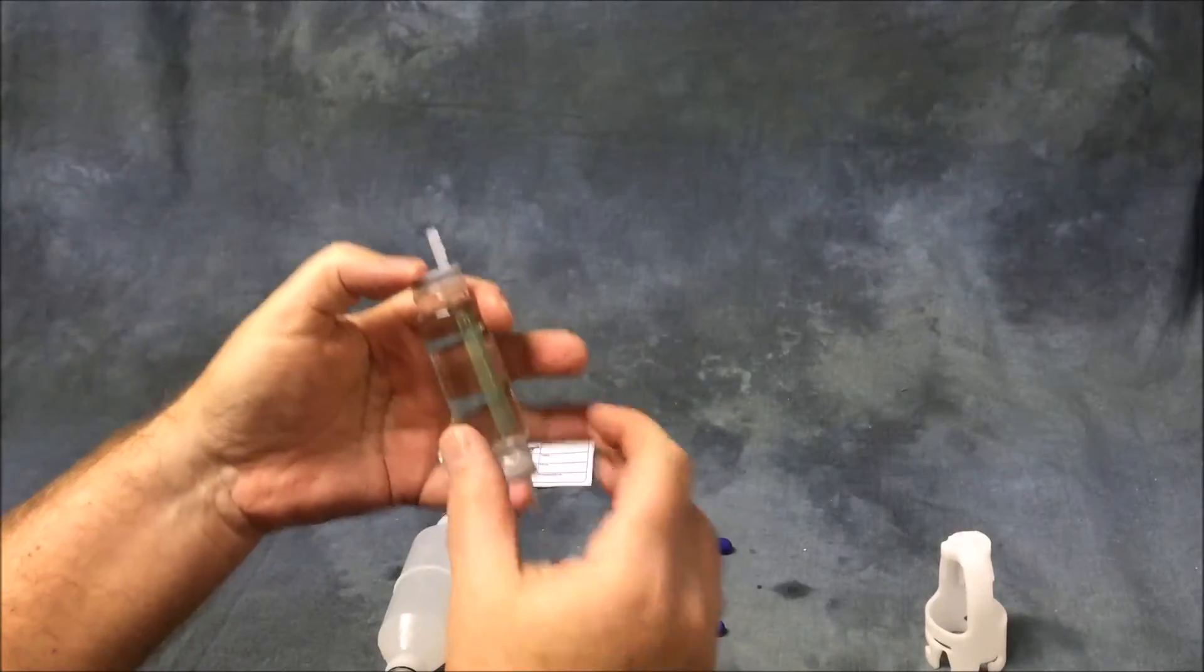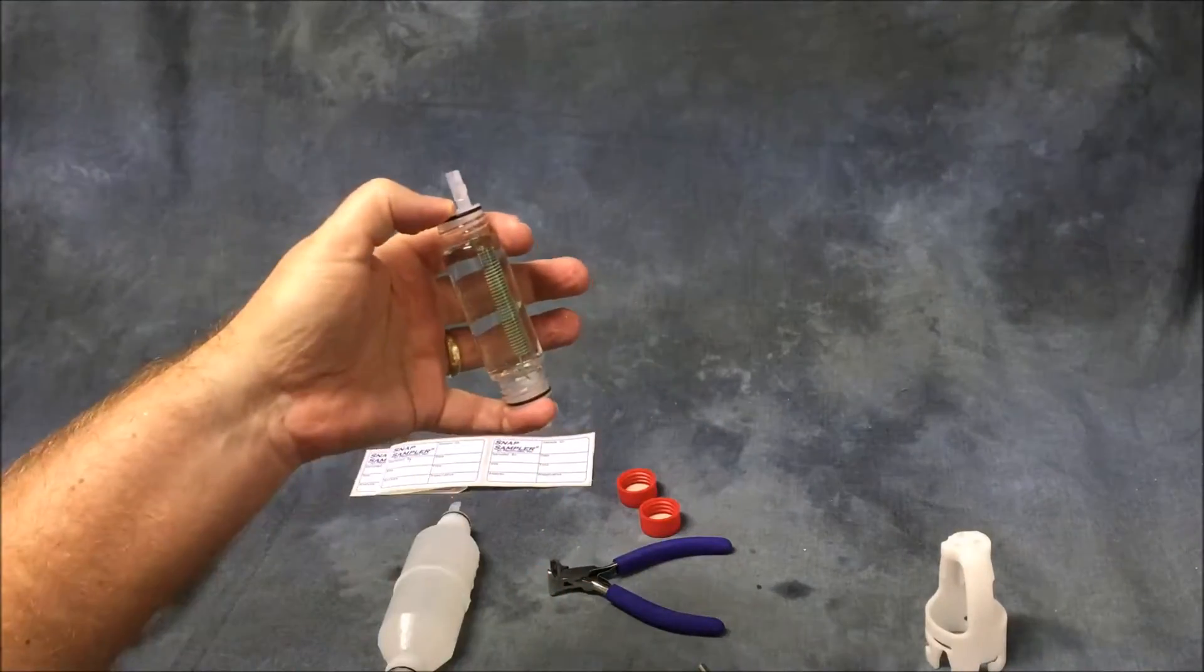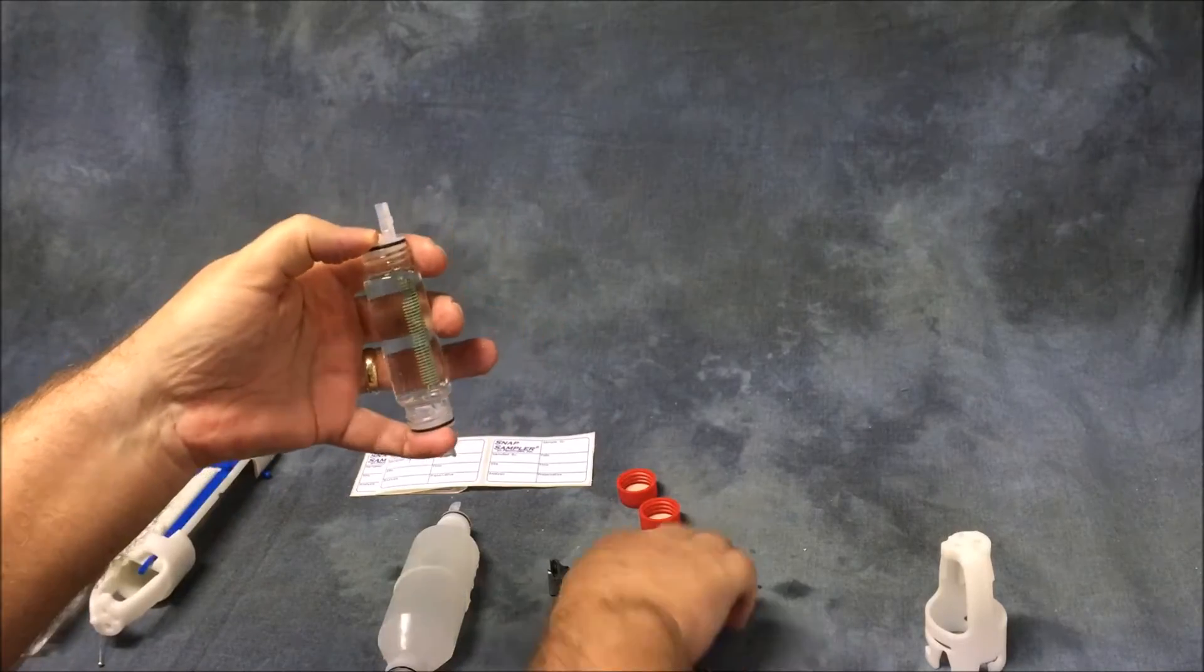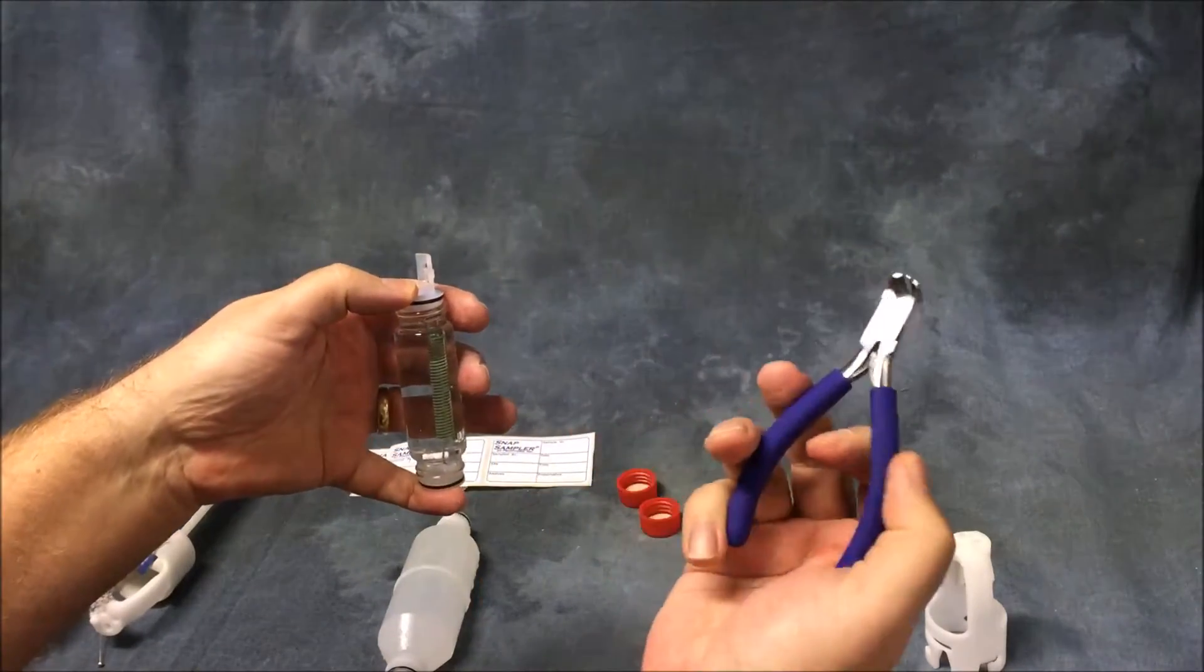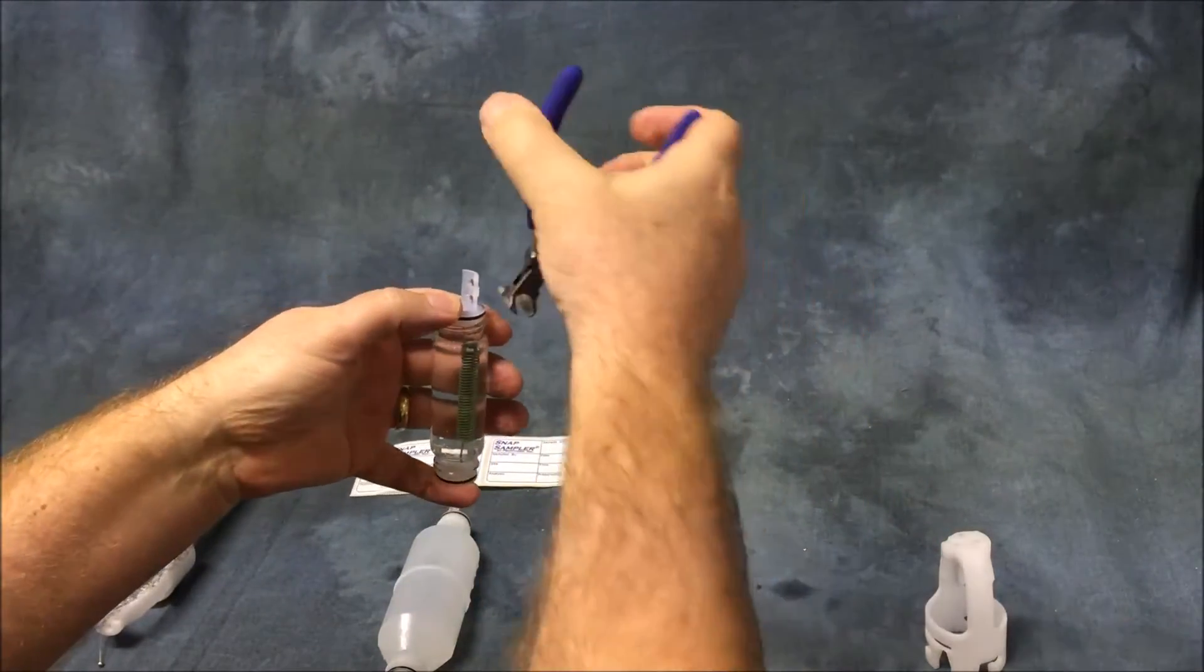Usually the easiest way is to hold the top and the bottom of the bottles in one hand and trim these tabs off using the clipper tool that is provided with the tool kit.